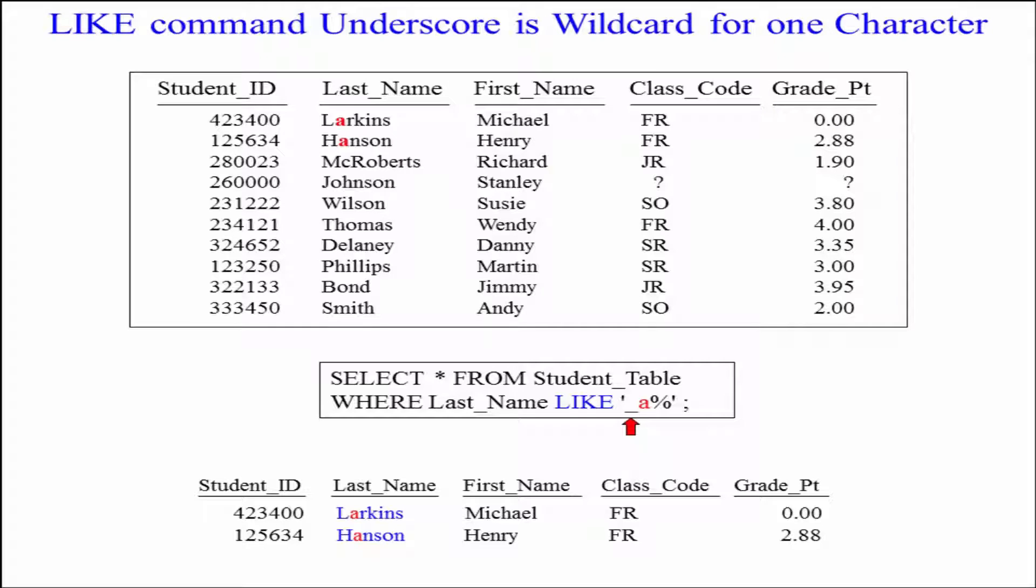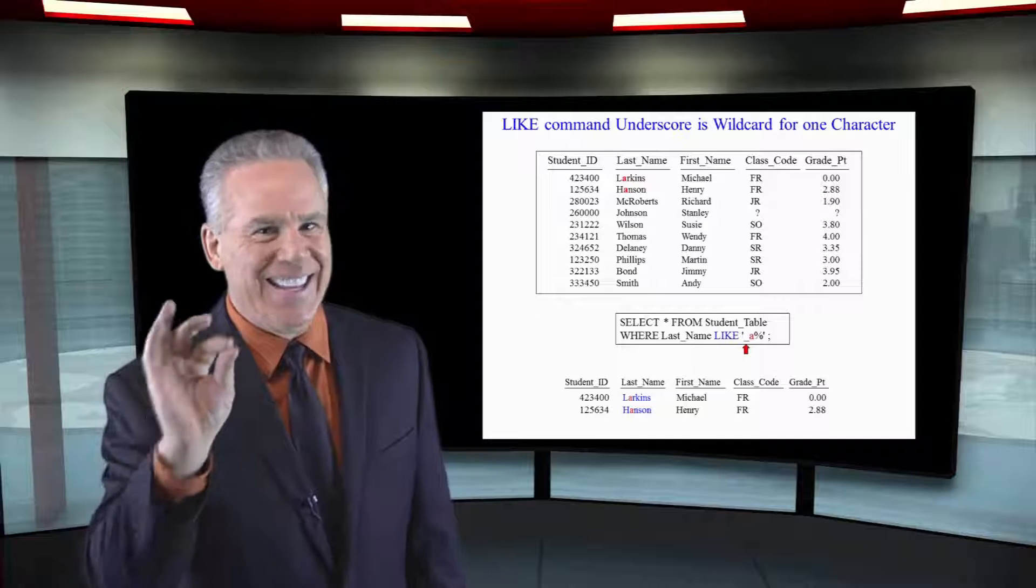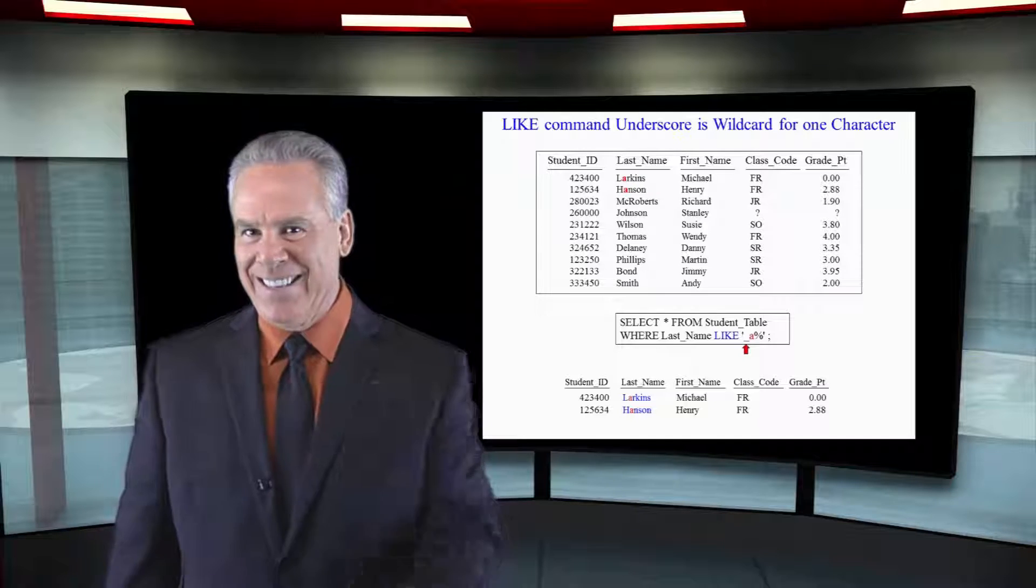So here, as you can see, where last name is like UNDERSCORE, A PERCENT means there will be any single character in front of the A. So in other words, any last name that has an A in the second character is going to come back in this case.